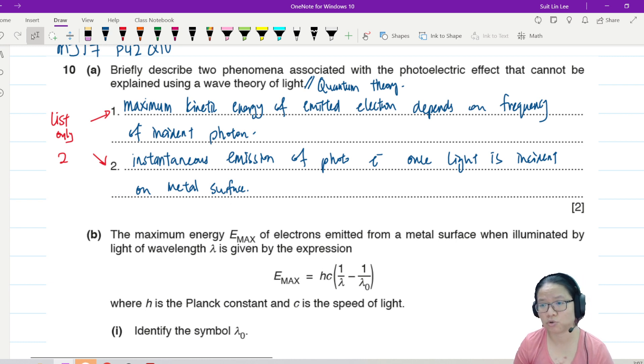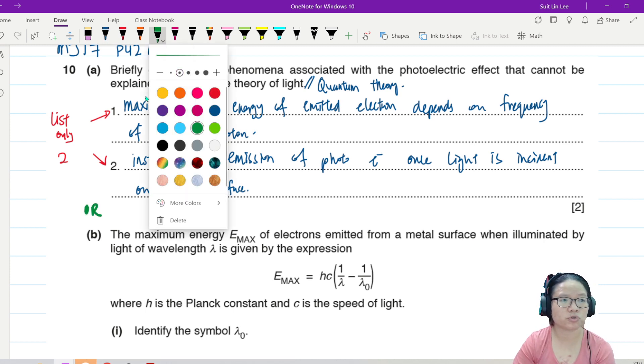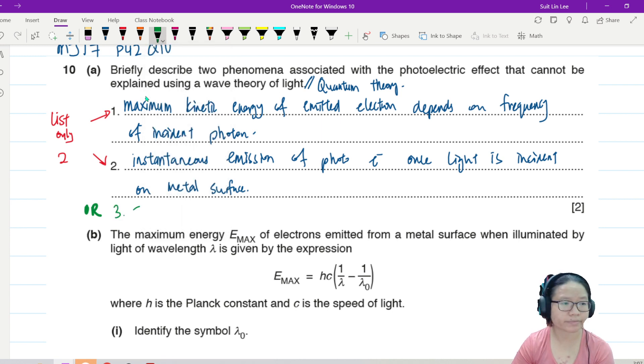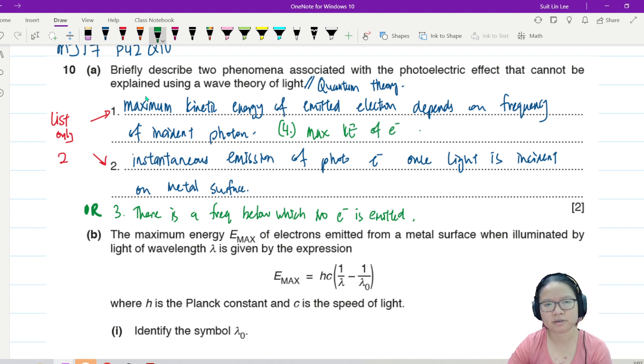Alright, other things that you can write includes the existence of threshold frequency. So you could say number three: there is a frequency below which no electron is emitted. And number four is sort of related to number one. The fourth one that you could possibly write would be the maximum KE of electron doesn't depend on intensity or is not affected by intensity of light.